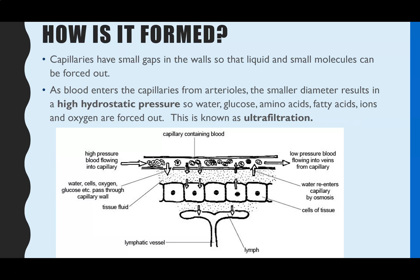So where does tissue fluid come from? Tissue fluid is formed because capillaries are only one cell thick — just a single layer of cells — and in between each of those cells there are tiny gaps. These gaps are big enough that liquid, such as water, can be forced out, along with very small molecules. Capillaries are attached to arterioles, which are attached to arteries.